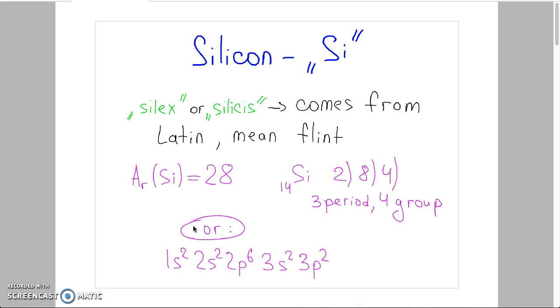We can also write the electronic configuration of silicon. As you can see here we have the electronic configuration for silicon and its 14 electrons.